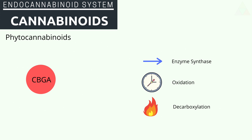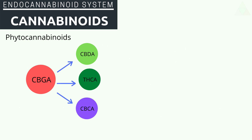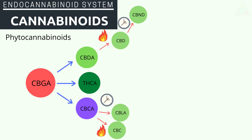For the most common cannabinoids, it almost always starts as CBGA, or cannabigerolic acid. From here it can take three main paths using enzymes — it will turn into CBDA, THCA, and CBCA. From here, CBDA can turn into CBD through decarbing, then into CBND through oxidation.